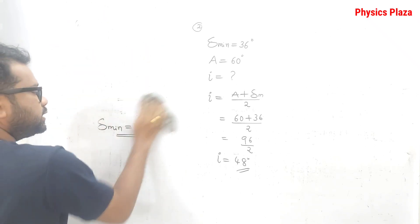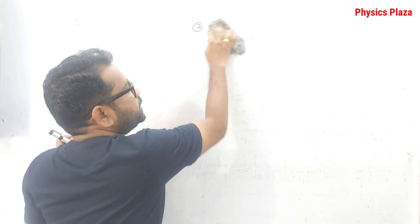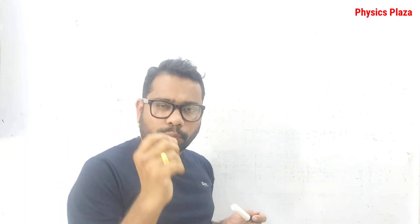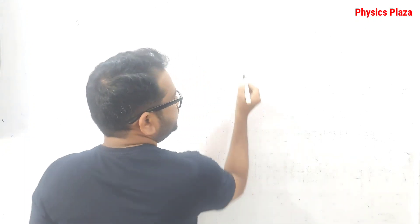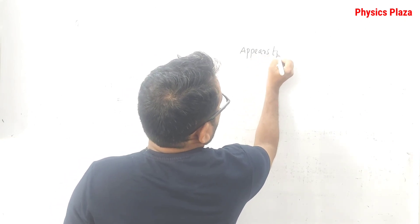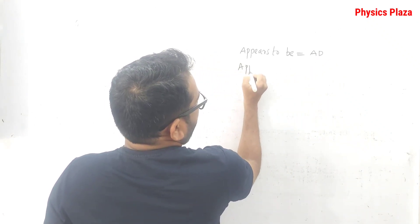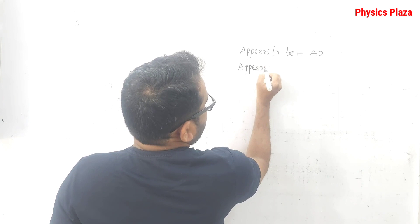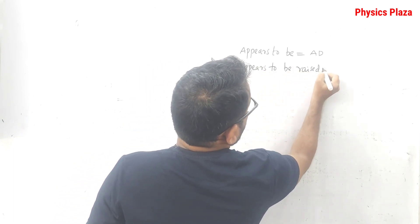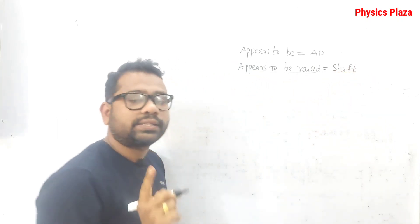Before solving numericals from exercise 4C, one important distinction must be understood. In some questions it is written 'appears to be' — that means it is apparent depth. In other questions it says 'appears to be raised' — 'raised' means it is a shift. This difference must be understood clearly.